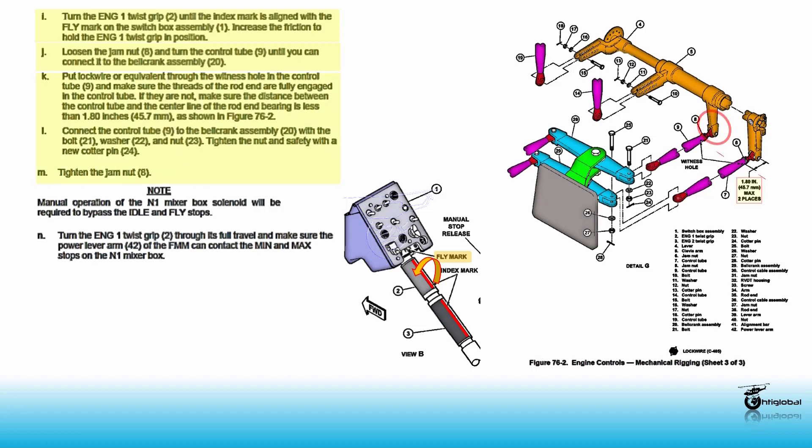Put lock wire or equivalent through the witness hole in the control tube 9 and make sure the threads of the rod end are fully engaged in the control tube. If not, make sure the distance between the control tube and the center line of the rod end bearing is less than 1.80 inches.